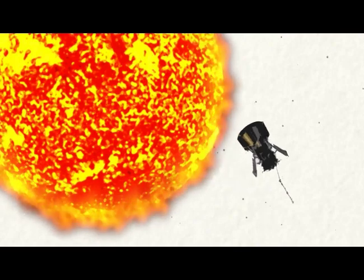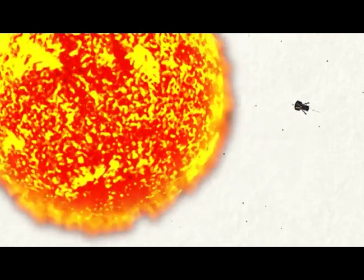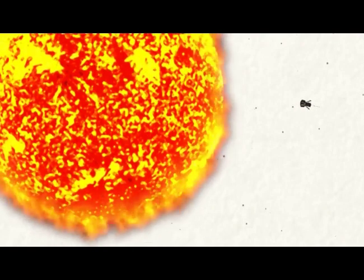NASA's Parker Solar Probe will soon fly closer to the Sun than any spacecraft before it, about 4 million miles from the visible surface. But getting that close to the Sun requires some fancy orbital mechanics.